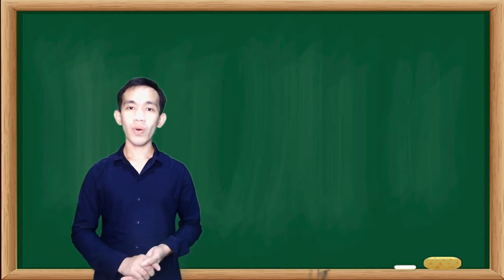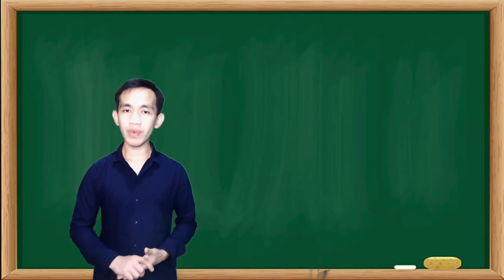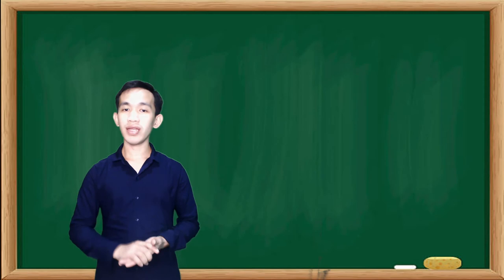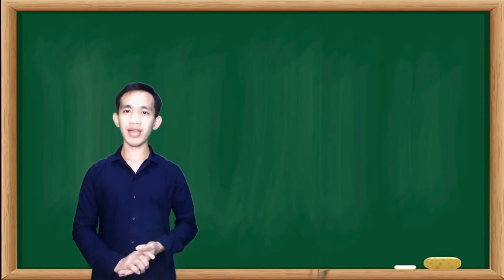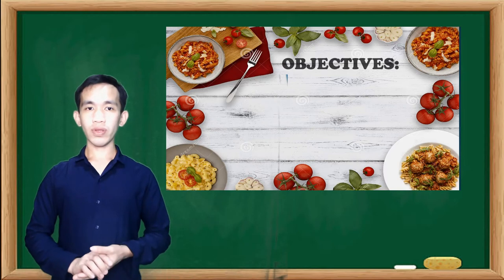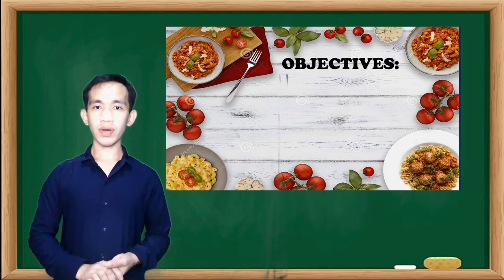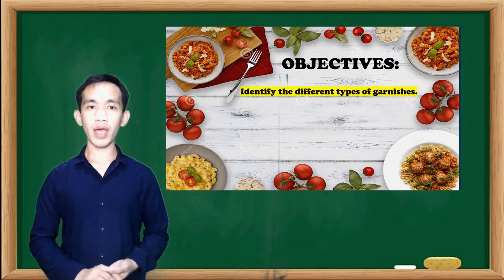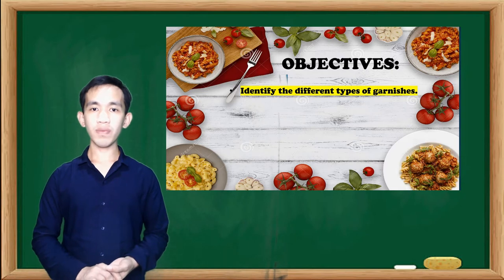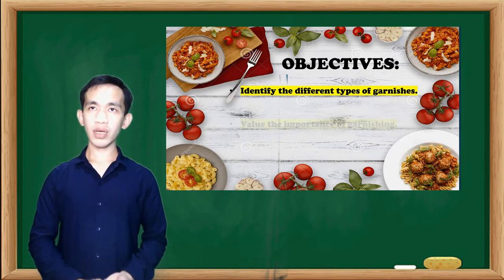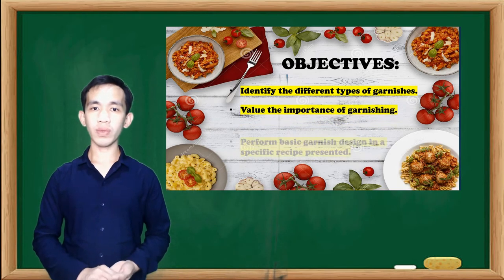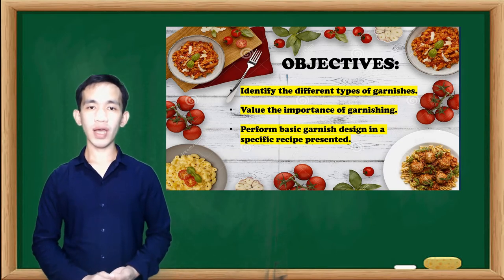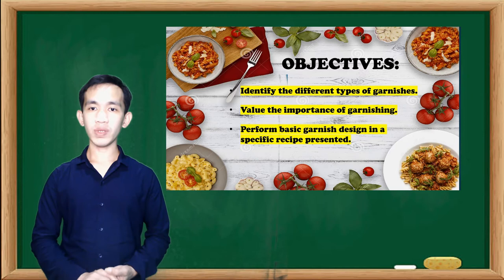Any idea of what our topic is for today? Okay, very good, Ms. Pame — it is all about garnish. Before we proceed to our lesson for today, let us read first our objectives. At the end of the lesson, 85% of the class will be able to: identify the different types of garnishes; value the importance of garnishes; and perform basic garnish design in a specific recipe presented.